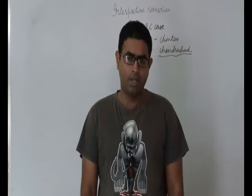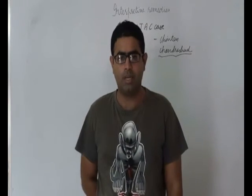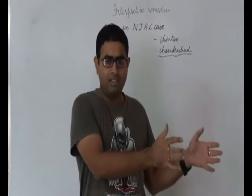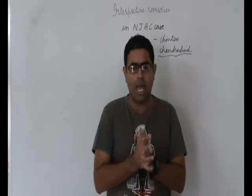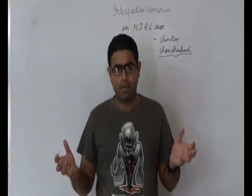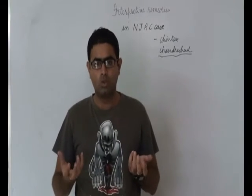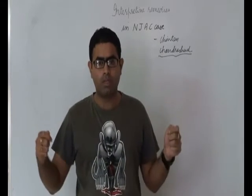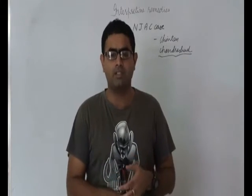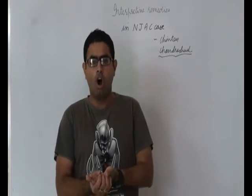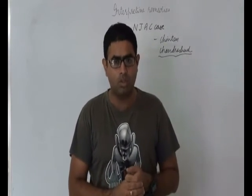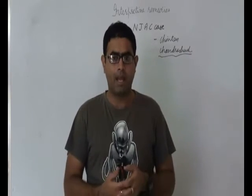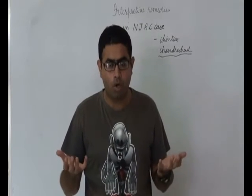This editorial is about how we have moved away from the system of collegium to the system of NJAC. It is also about how the executive wants to build more and more power, and about how the judiciary is trying to self-aggrandize itself — how the judiciary wants to make itself immune from the transgressions and interferences of the executive. Basically, this editorial is about how the balance needs to be maintained between the executive and the judiciary, which has been the most cardinal thing in the Constitution of India, a cardinality upheld by Montesquieu, the French scholar.